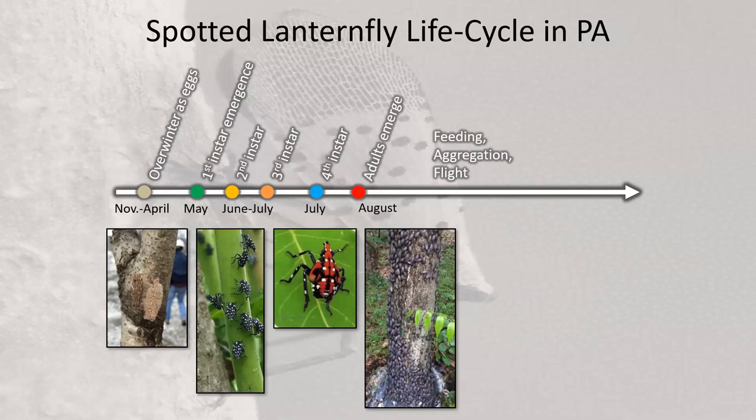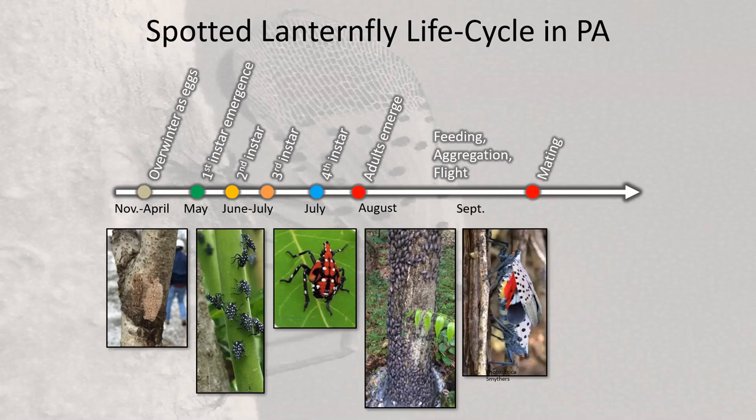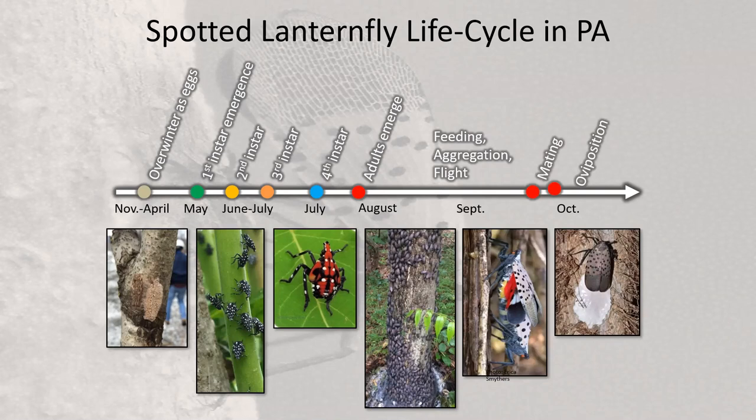Early instars feed on more succulent, softer tissues since their proboscis is small. Feeding requirements increase dramatically in fourth instars and adults, leading to massive honeydew production. Mating occurs and egg laying begins around mid-September. The first hard frost or freezing temperatures kills the adults — they do not overwinter as adults in their current range.